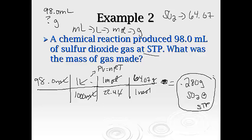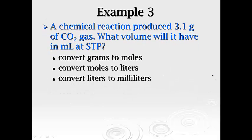And that's going to give me 0.280 grams of sulfur dioxide at STP. All right, one more. It says a chemical reaction produced 3.1 grams. This time, we're going to go the opposite direction.